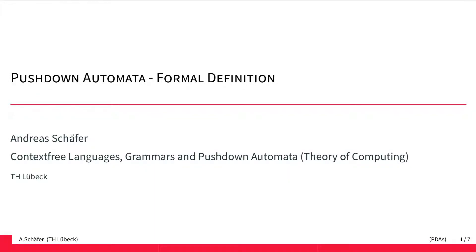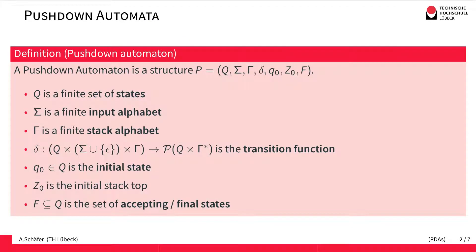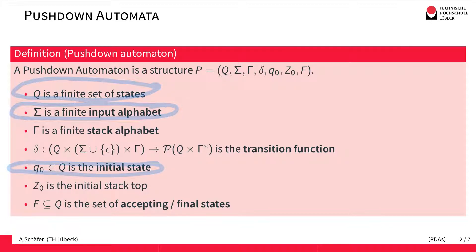In a previous video we've seen the informal idea of pushdown automata. This video gets a bit more formal and is about the formal definition. A pushdown automaton is simply a structure quite similar to the finite automata we already know. Very similar to finite automata, we have a finite set of states Q, an input alphabet, an initial state, and a set of final or accepting states.